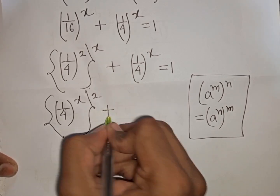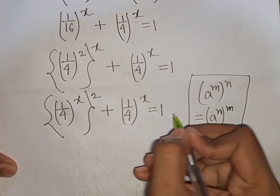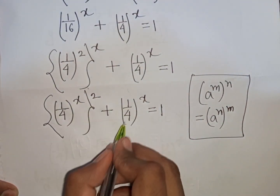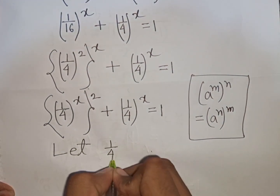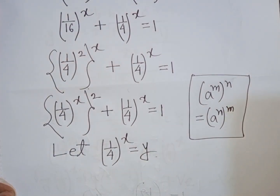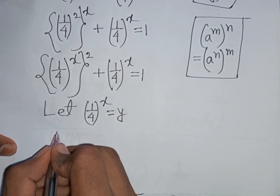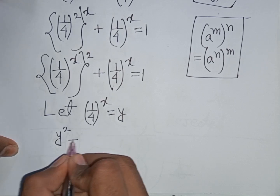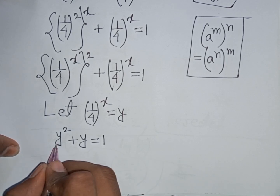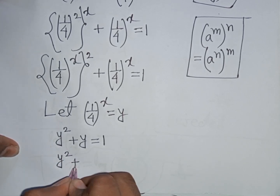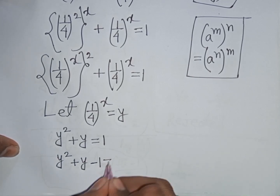So we have ((1/4)^x)^2 + (1/4)^x = 1. Both terms involve (1/4)^x, so let y = (1/4)^x. Our equation becomes y^2 + y = 1, or y^2 + y - 1 = 0.